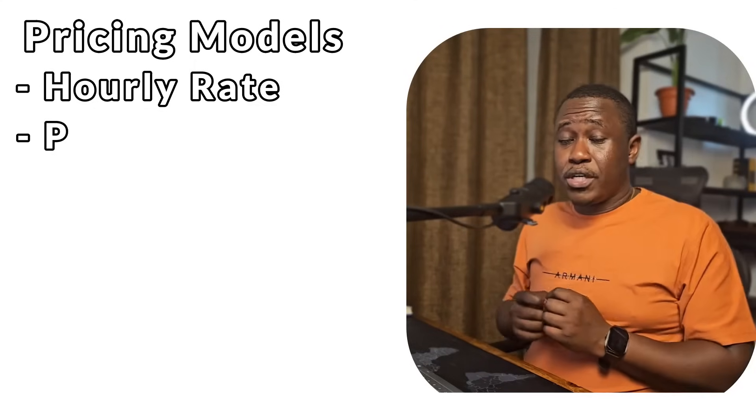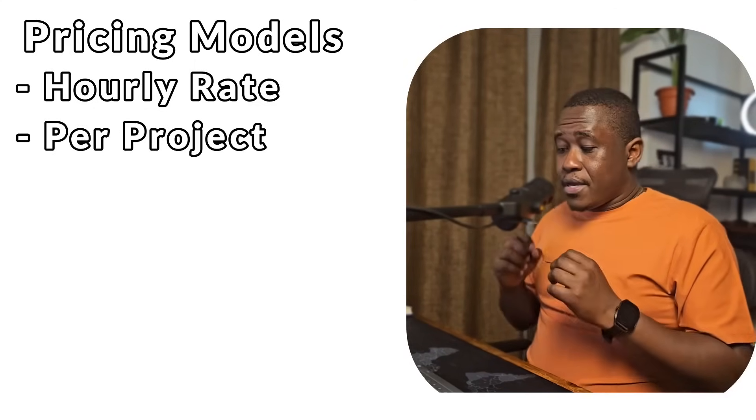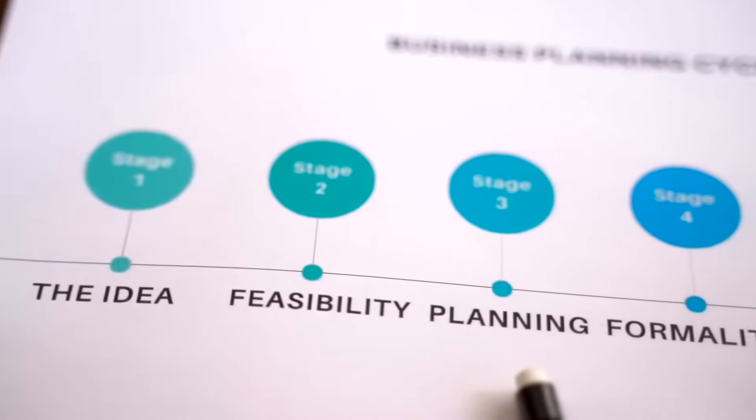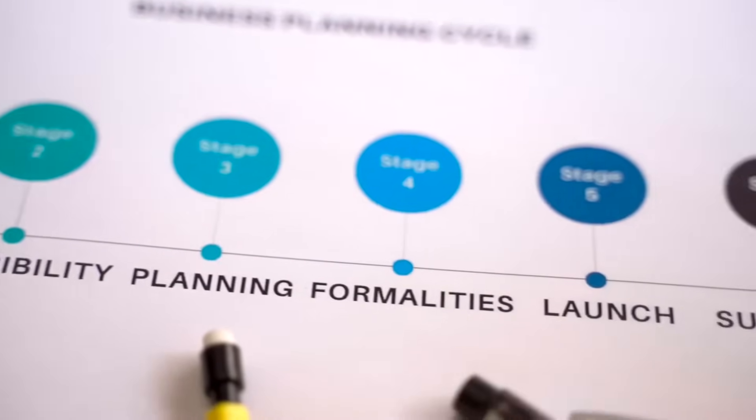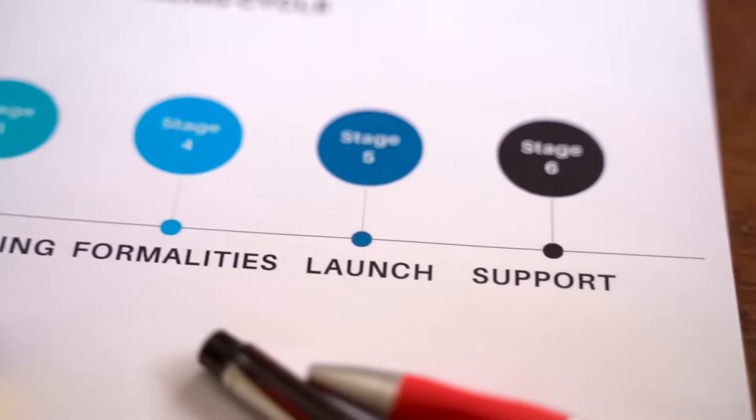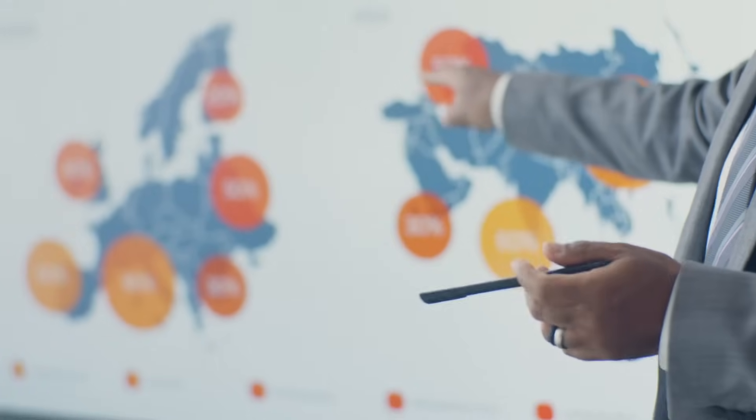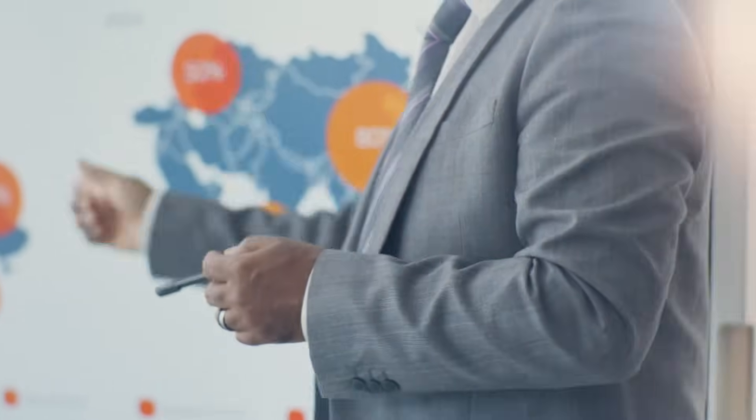The second model is the per-project model. This is best when the scope is clear, and you find it in most cases for projects that have phases — phase one, phase two, phase three, or milestone one, two, and three. If the scope is very clear, you can charge or price based on the project. For example, if someone wants a dashboard displaying health facilities in a region, you already know the outcomes and scope, so you can charge per project.